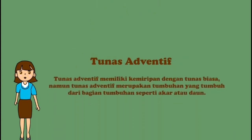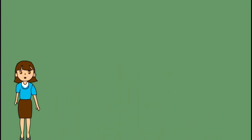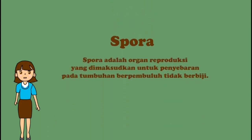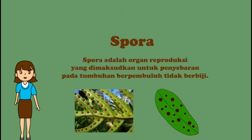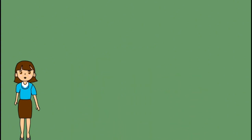Yang kedua, tunas adventif. Tunas adventif memiliki kemiripan dengan tunas biasa, namun tunas adventif merupakan tumbuhan yang tumbuh dari bagian tumbuhan seperti akar atau daun. Contoh tumbuhan yang berkembang biak menggunakan tunas adventif diantaranya cocor bebek, cemara, dan sukun. Yang ketiga, spora. Spora adalah organ reproduksi untuk penyebaran pada tumbuhan berpembuluh tidak berbiji. Contoh tumbuhan berspora adalah lumut, jamur, dan tanaman paku.